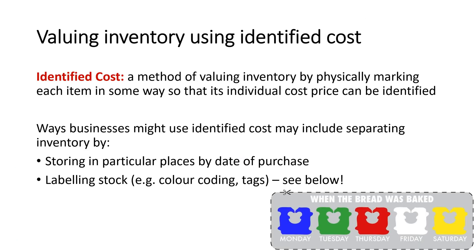Identified cost is the first method. This is a method where you physically mark or label each item in some way so you can tell which cost price it has. A business might store items in particular places — for example, $10 stock in the green box, $20 stock in the blue box — or they might use color coding or tags. A similar real-world example is bread tags: supermarkets use different colored bread tags to tell which stock was baked on what day, identifying which item is oldest and which is freshest.